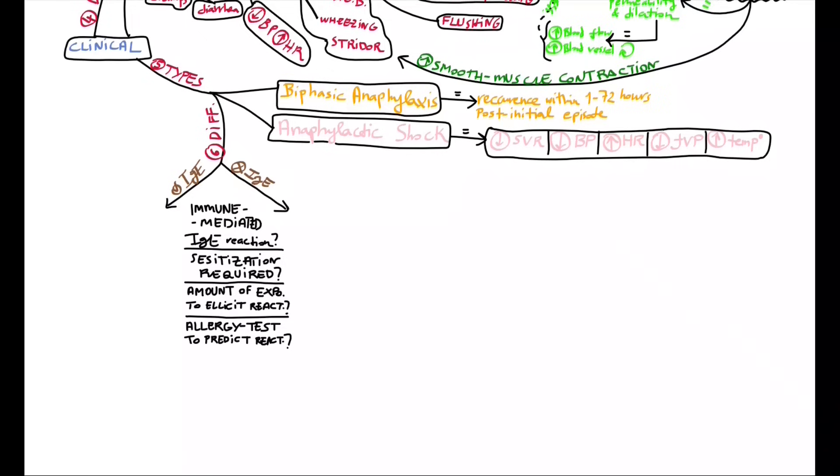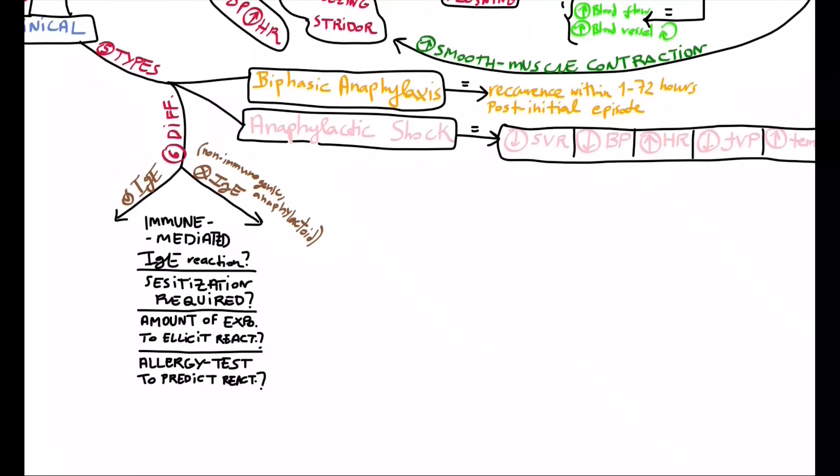In non-immune anaphylaxis, aka anaphylactoid reaction, there's no IgE involvement, no first sensitization phase. So, in this type of reaction, we will need a much higher amount of exposure compared to an IgE immune-mediated reaction, and since there's no previous sensitization, we cannot perform a test to gauge a response reaction.